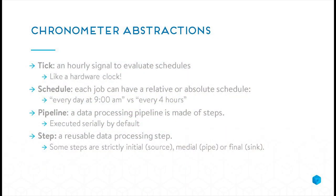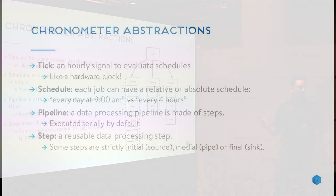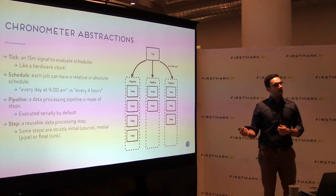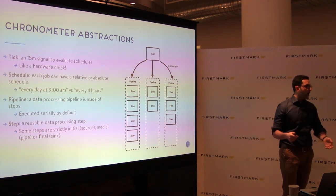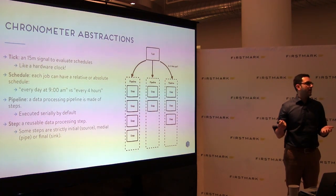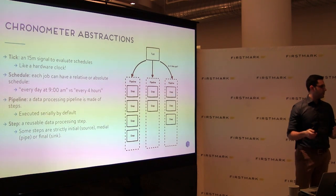So we had to build a system called Chronometer. To explain what it does: there's this concept of a tick — think of it as a hardware clock that ticks every 15 minutes in our case — and we use that for synchronization. You can define schedules that run jobs shuttling data back and forth, specified either as relative timestamps like every 24 hours from the last run, or absolute like every day at 7 a.m.